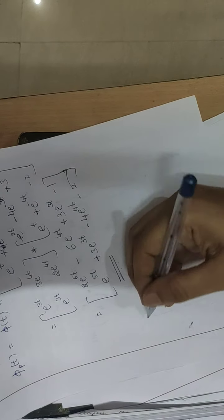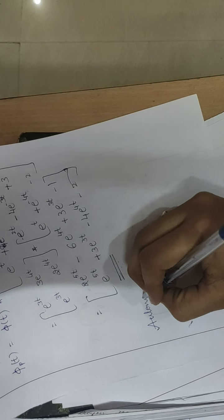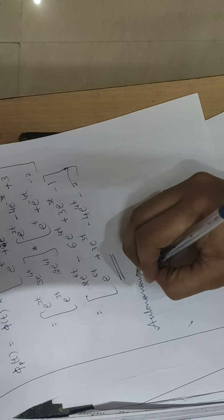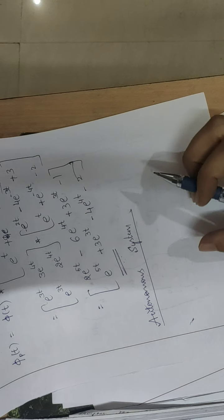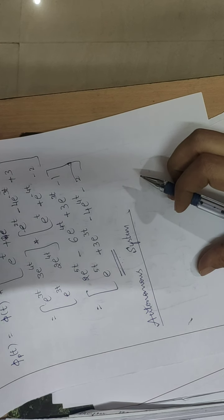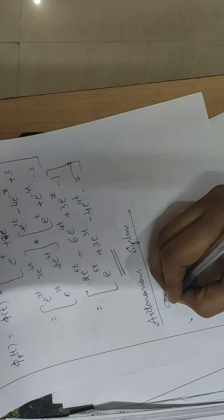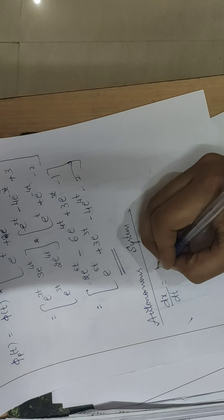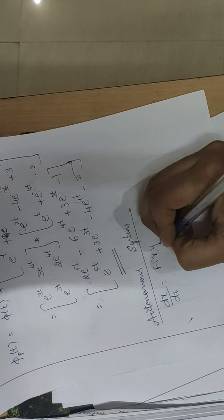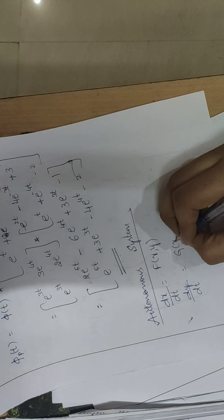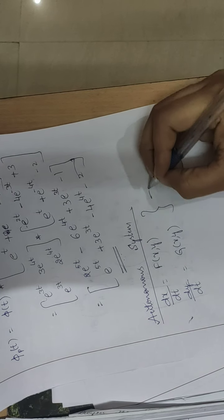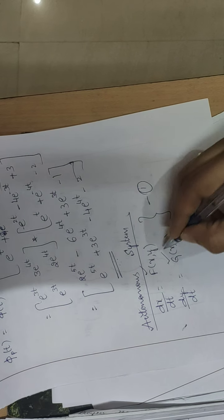The next topic is autonomous systems. To define an autonomous system, consider the first-order system: dx/dt = f(x, y) and dy/dt = g(x, y) — call this equation one — where f and g are continuous and have continuous first-order partial derivatives.